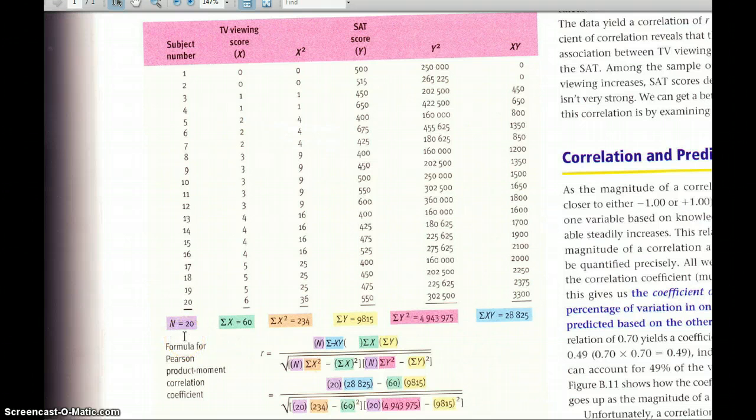Then you're going to start off with a column of scores for the first variable, so in this case it's TV viewing score, so you just write down the column of numbers for each subject. Then you square all of those numbers. So here's x, here's x squared, so for example 0 times 0 is 0, and if we go down to the bottom 6 times 6 is 36.